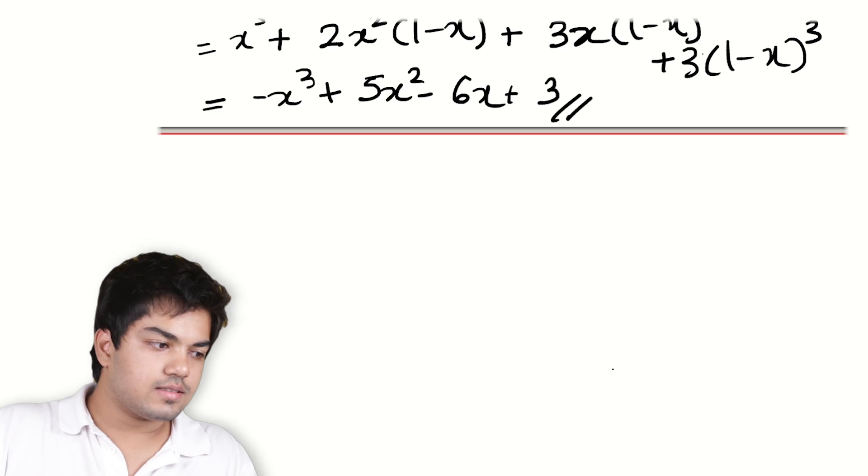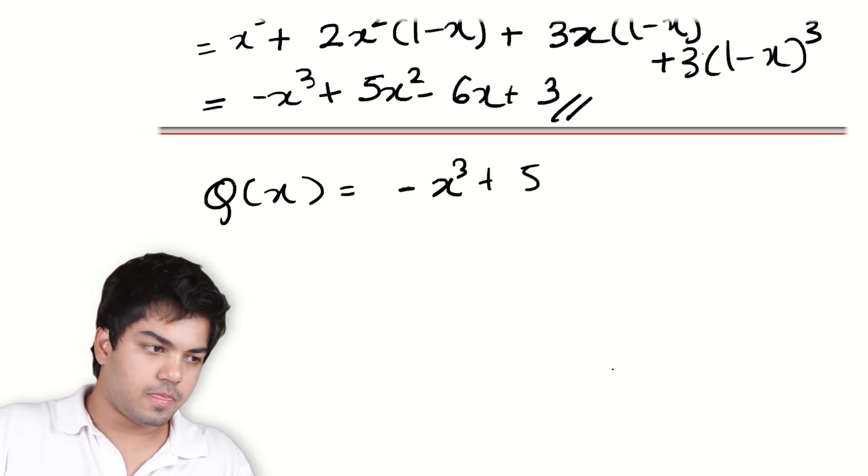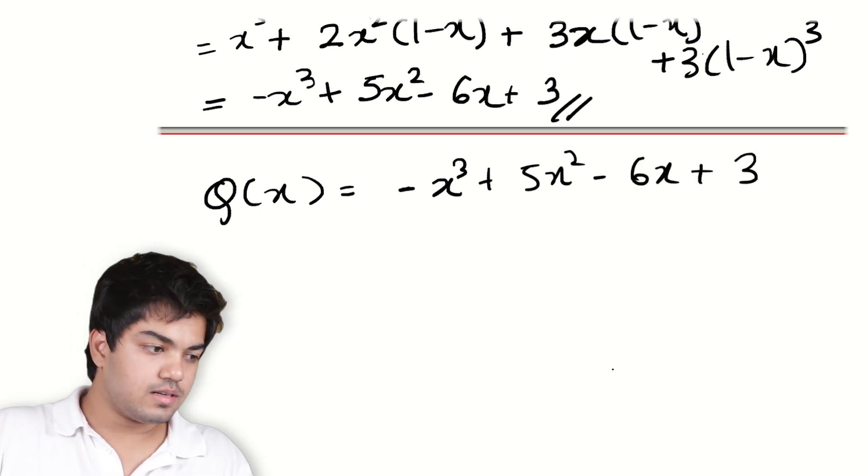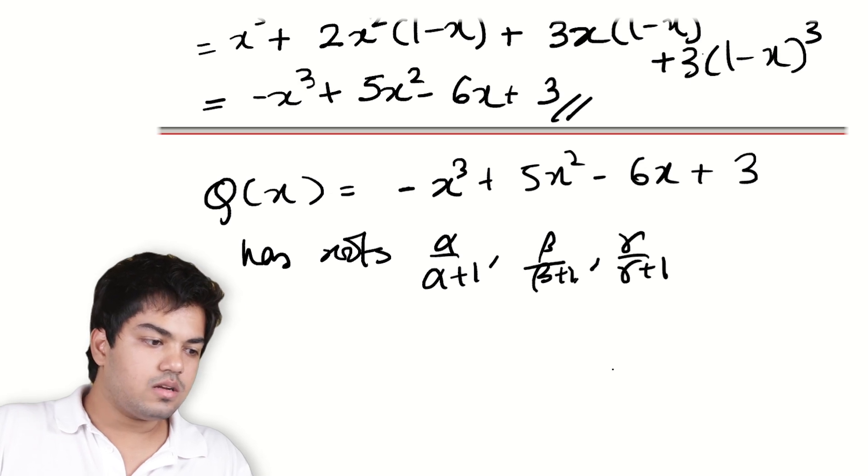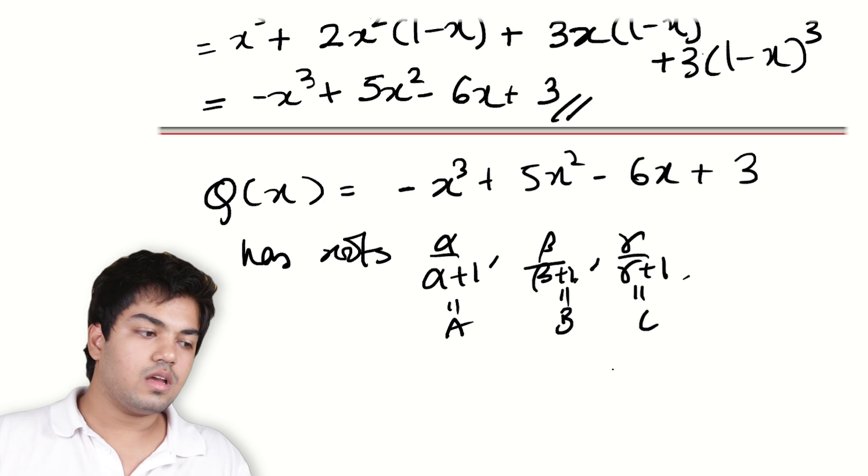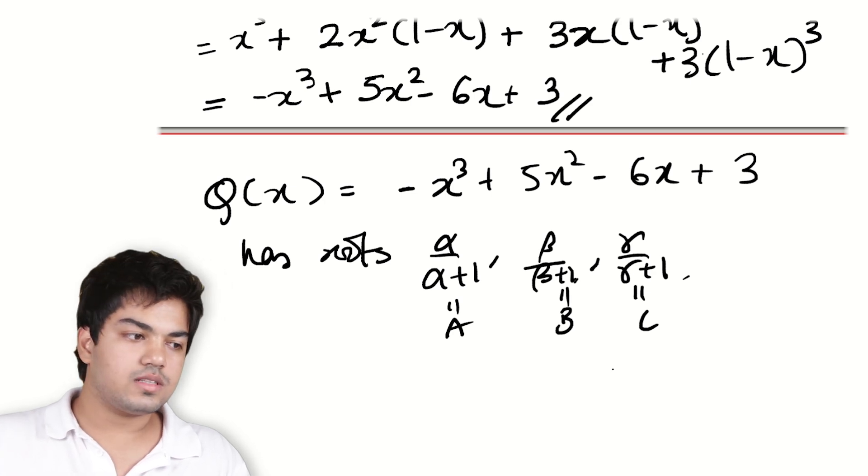Now what do we have? So Q(x), this is very nice, right? Q(x) is this simple looking polynomial. The property that has roots α/(α+1), β/(β+1), and γ/(γ+1). I'll call these capital A, capital B, capital C for my convenience. Why is this the case?